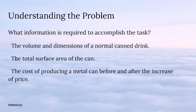Next, what information is required to accomplish the task? First, we need the volume and dimensions of a normal drink can, the total surface area of the can, and the cost of processing a metal can before and after the price increase, so that we are able to accomplish the task of trying to reduce the total surface area in order to reduce the cost price.